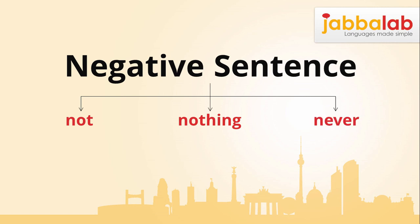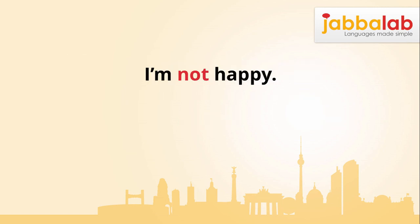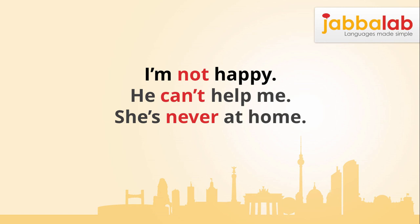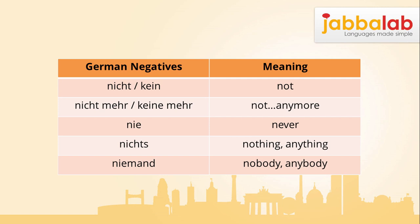The word 'not' is often combined with other English verbs, for example 'doesn't', 'won't', or 'can't'. For example: 'I'm not happy', 'he can't help me', 'she's never at home'. Negative sentences in German are formed with the following words.